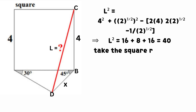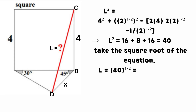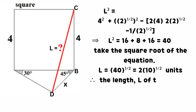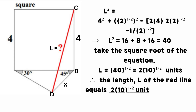Taking the square root of the equation, we have that L equals the product of 2 and the square root of 10, measured in units. Therefore, the length L of the red line equals 2 times the square root of 10 units.